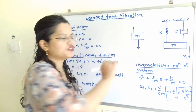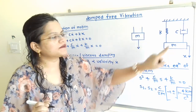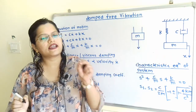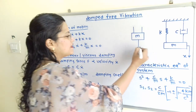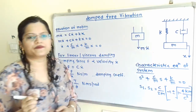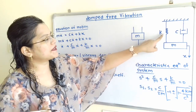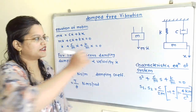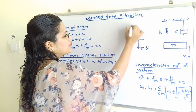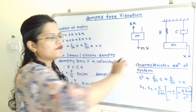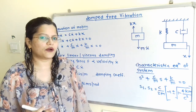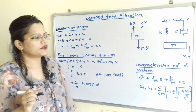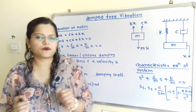The acceleration force is mass multiplied by acceleration. Acceleration in terms of X we write as X double dot, so we write M into X double dot. The spring force acts in the upward direction, shown as K into X, and the damping force also acts in the upward direction, shown as C into X dot. This is the free body diagram.